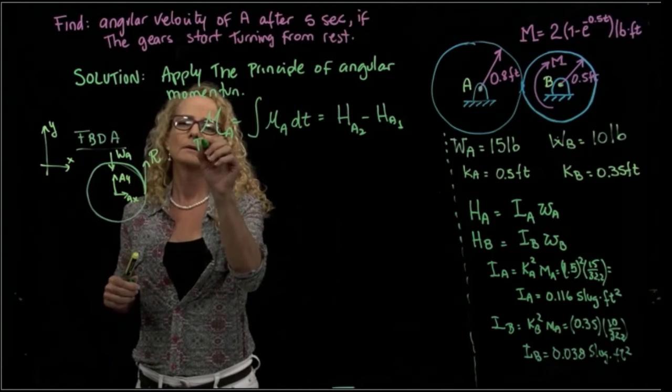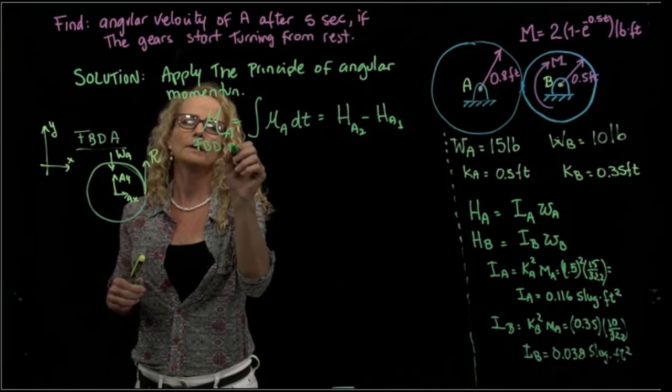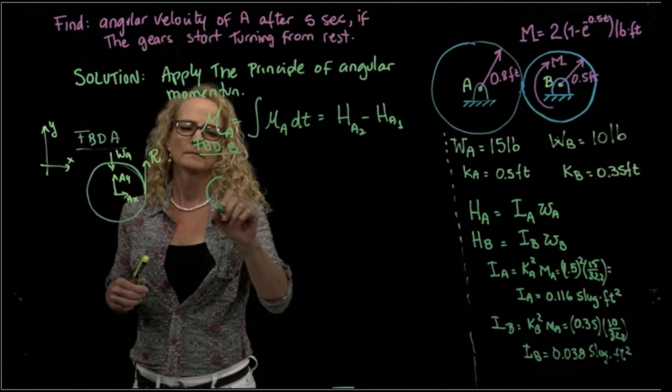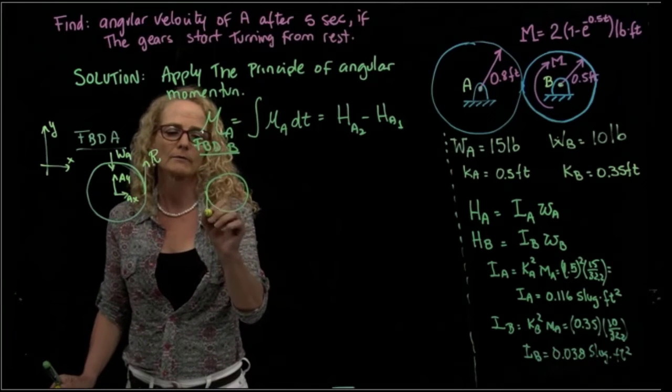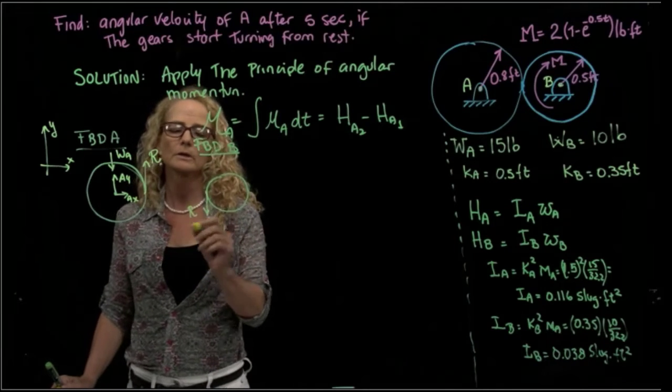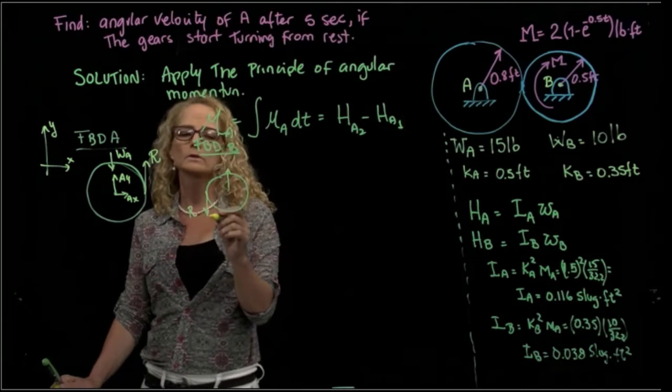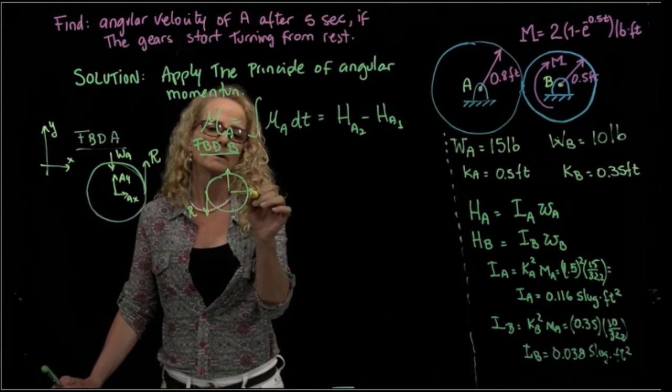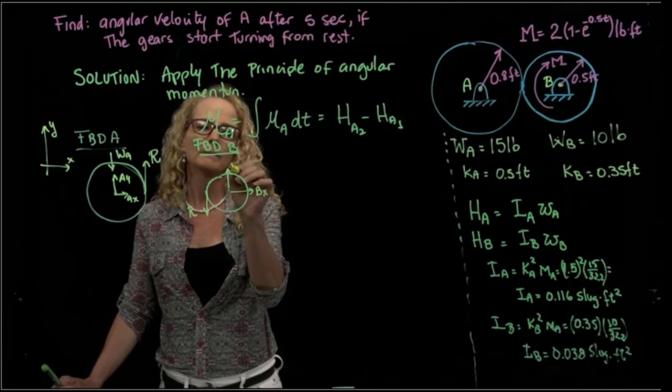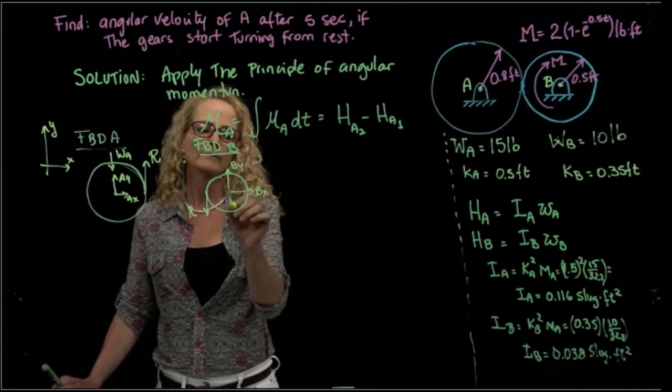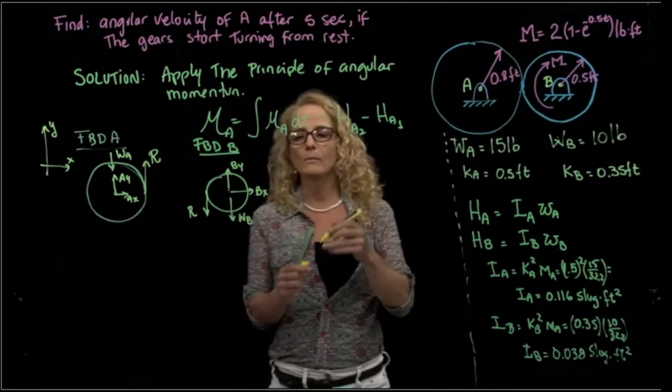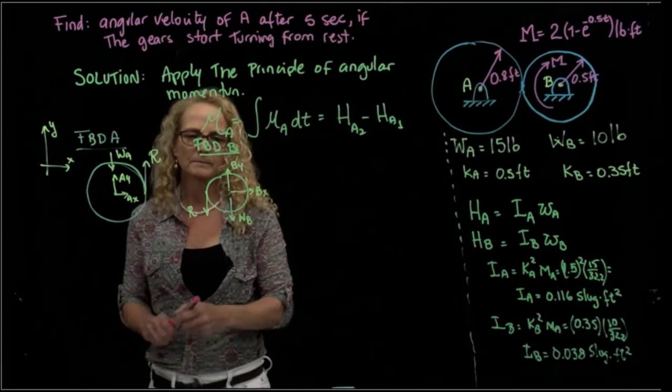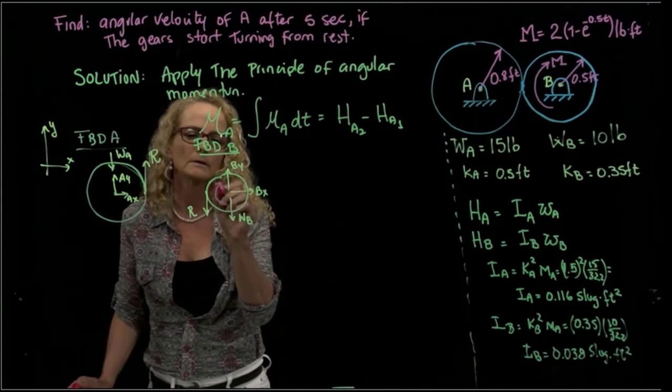And if I do the free body diagram of B, I will have by action and reaction exactly the same force but in the opposite direction. I have also two forces, Bx and By. I have the weight of B. And I have a moment applied to that gear, which is this one right here, moment.